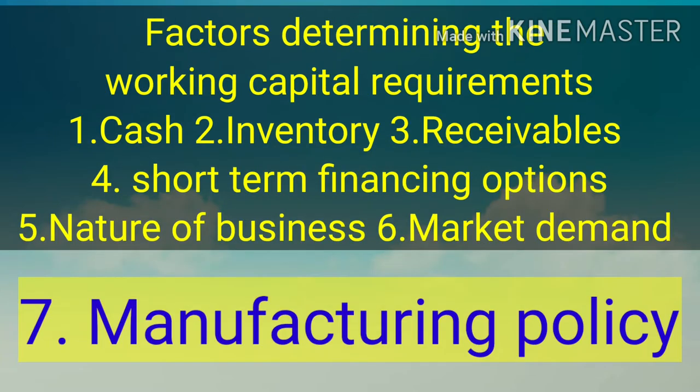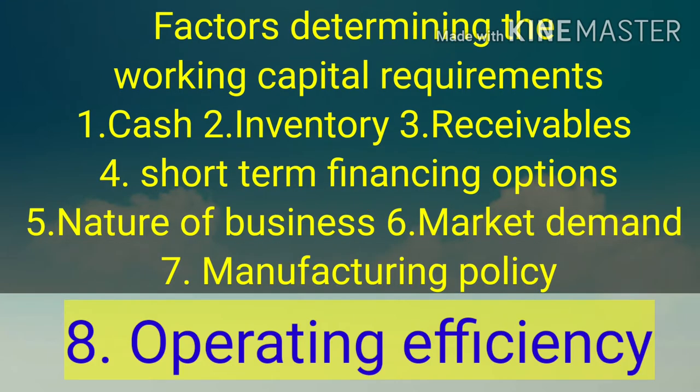Seventh, manufacturing policies may affect working capital, which is very evident in seasonal businesses. A seasonal business can either produce throughout the year or only during the peak period. Producing throughout the year leads to high investment in finished goods and more working capital needed, but producing only during the peak period risks not being able to retain efficient or skilled staff. Eighth is operating efficiency — if the company operates efficiently, we can reduce working capital requirements by eliminating waste and improving coordination.